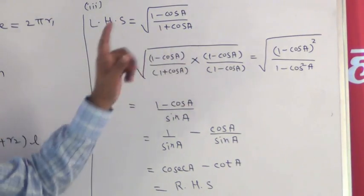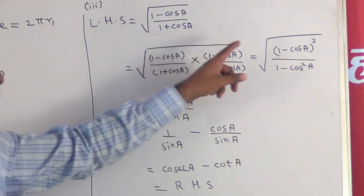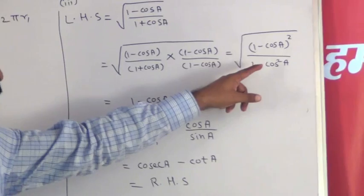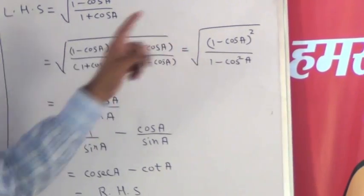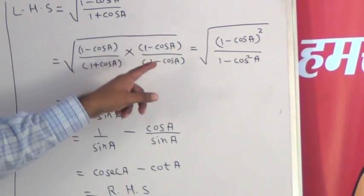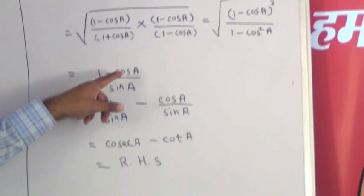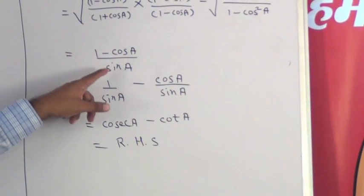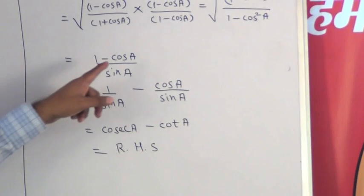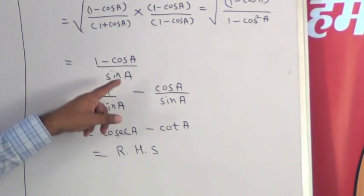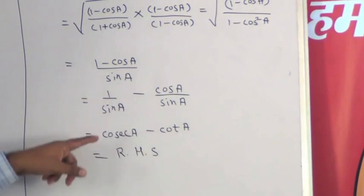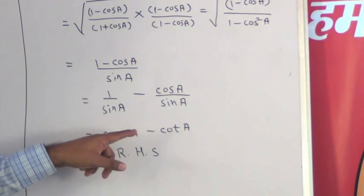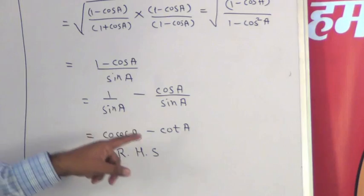In next step 1 minus cos a upon 1 plus cos a we will multiply numerator and denominator by the bracket 1 minus cos a. And after solving this we get 1 minus cos a bracket square upon 1 minus cos square a in under root. So, after removing the root sign we get 1 minus cos a and 1 minus cos square a is sine square a whose square root is sine a. Now, splitting the terms 1 upon sine a minus cos a upon sine a in next step we get cosec a minus cot a. That is what we have to prove because that is right hand side.